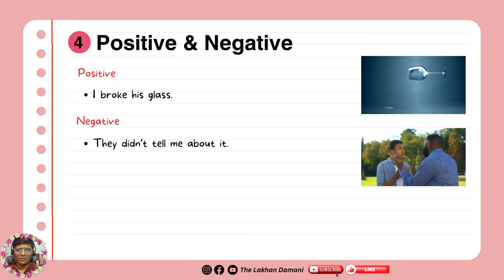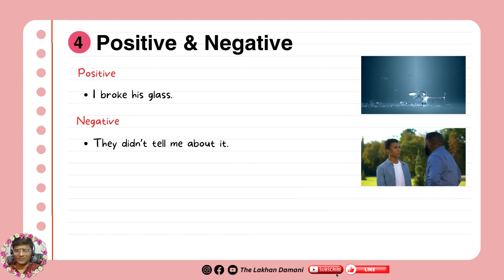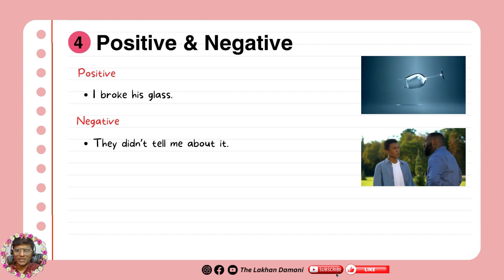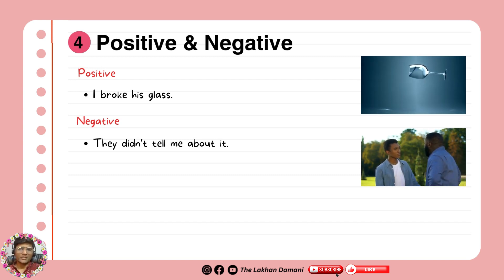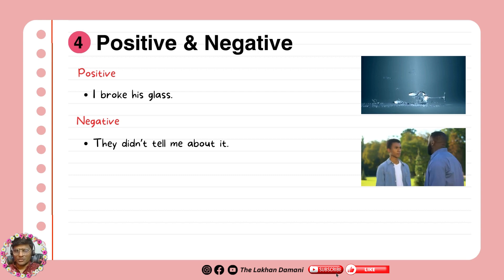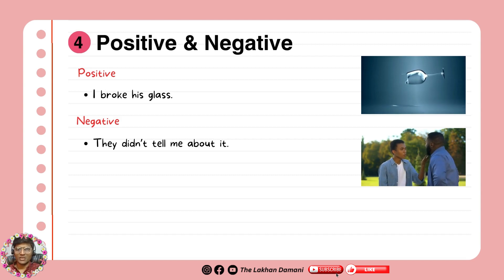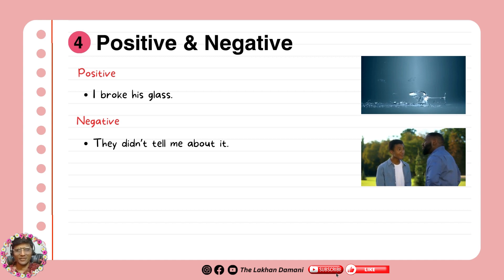Moving to point four: positive and negative in two sentences. Positive example: I broke his glass — we use subject plus second form. Negative example: they didn't tell me about it. We already used the past form with did, so you cannot say they didn't told me about it — that's wrong. They didn't tell me — that's correct. You can create more sentences for better practice.